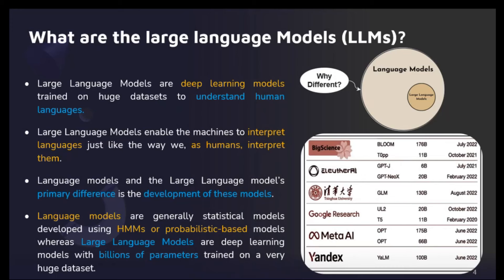These models are exceptionally intelligent machines which are trained on a huge, massive number of datasets. The purpose of these LLMs is to understand human languages and interact with humans by understanding their language. They are not ordinary models — they are deep learning champions, having capabilities with billions of parameters. A language model, which we call a traditional model, is more generic than a large language model.